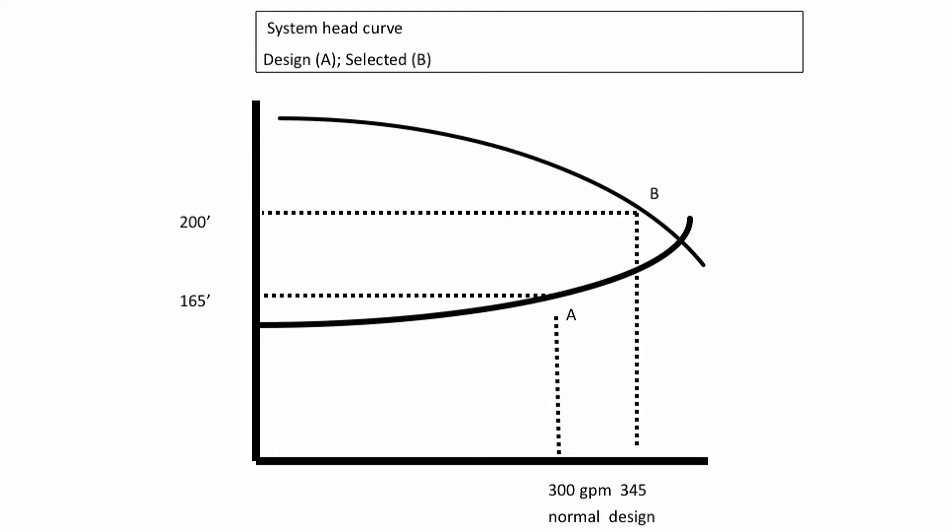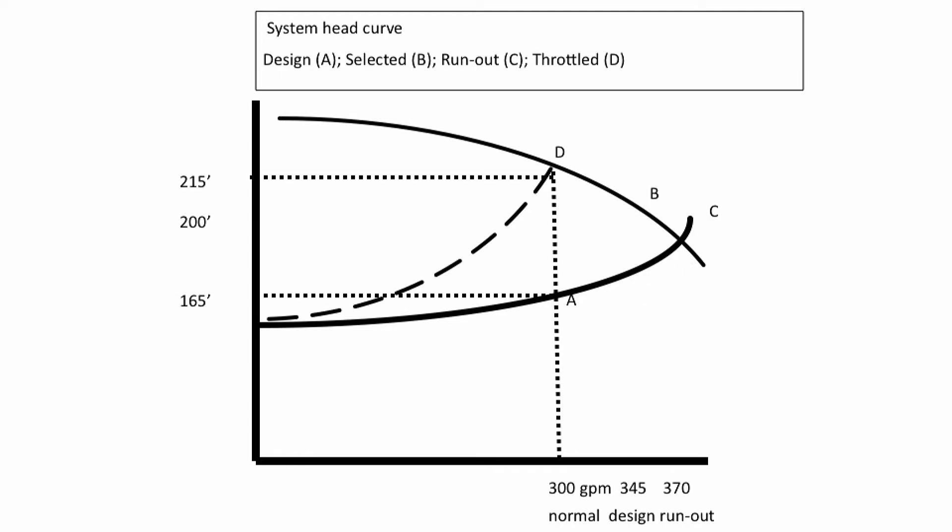You pick a pump for this service. If your original calculations are correct, the pump will now run out to 370 GPM, point C. In order to have a flow of 300 GPM, you must throttle the control valve to add head to run the pump back on the curve to this point D.